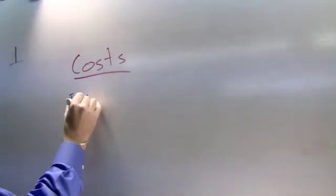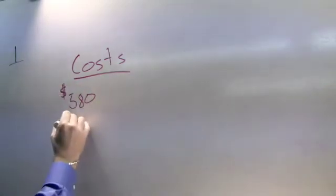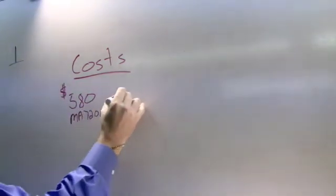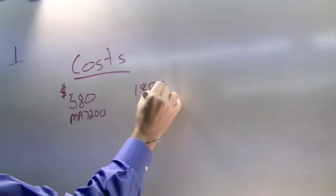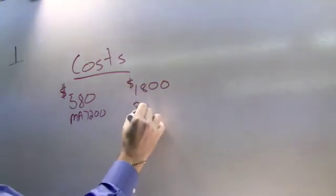List price is about $580 times whatever multiplier you're going to get. The bypass, and this is just for the MA7200, the bypass that goes with it, the three contactor bypass, is about $1,800 list price. And that's for the bypass with the drive.